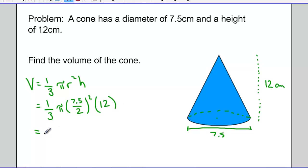You should be practicing evaluating questions like this in one step on your calculator. And when I do that, I get an answer of, let's go to one decimal place, 176.7, which means the volume of this cone is 176.7 centimeters cubed.